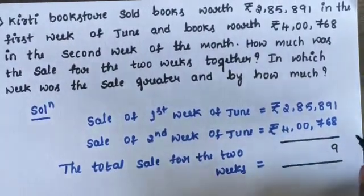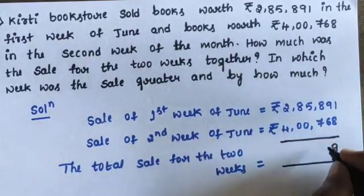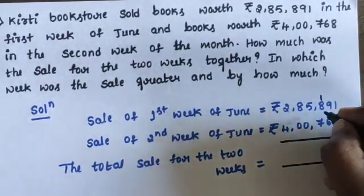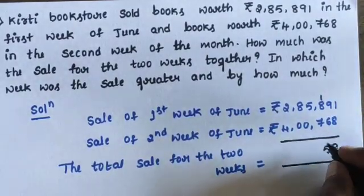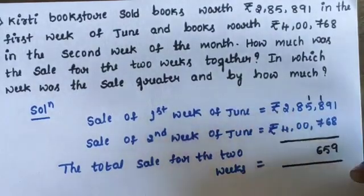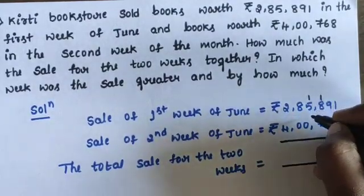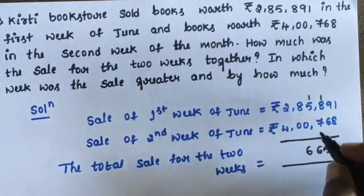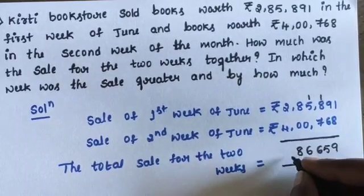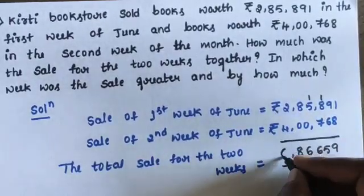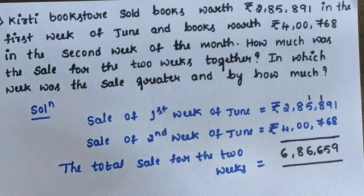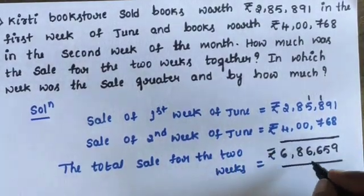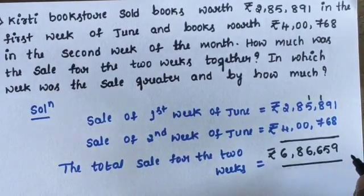1 plus 8 is 9, 9 plus 6 is 15 — write 5, carry 1. 1 plus 8 is 9, 9 plus 7 is 16 — write 6, carry 1. 1 plus 5 is 6, 6 plus 0 is 6. 8 plus 0 is 8. 2 plus 4 is 6. The total sale for the two weeks amount is equal to Rs. 6,86,659.